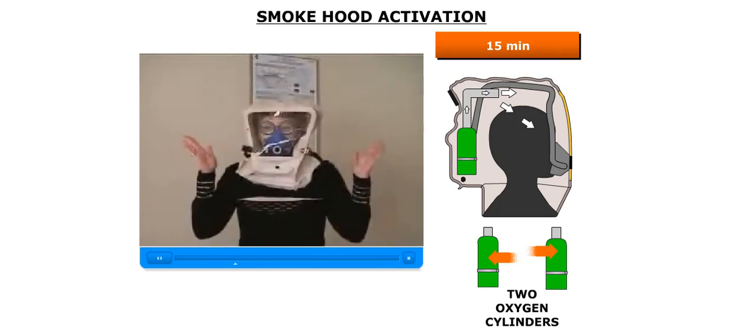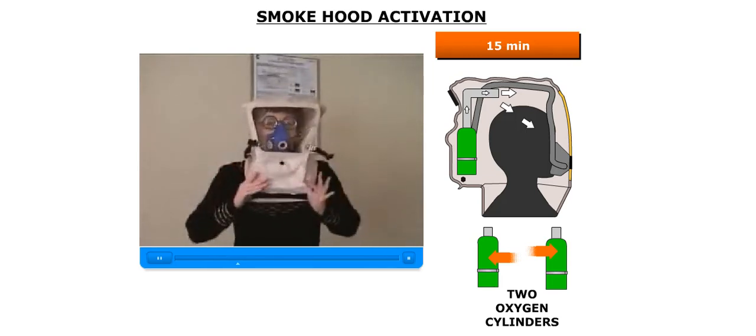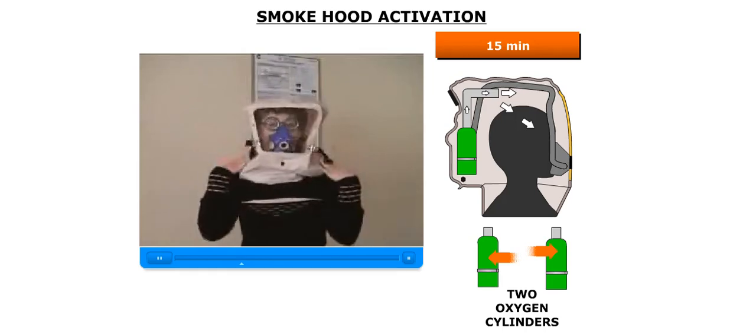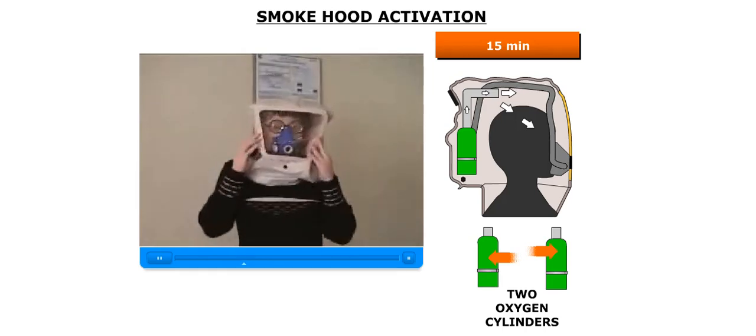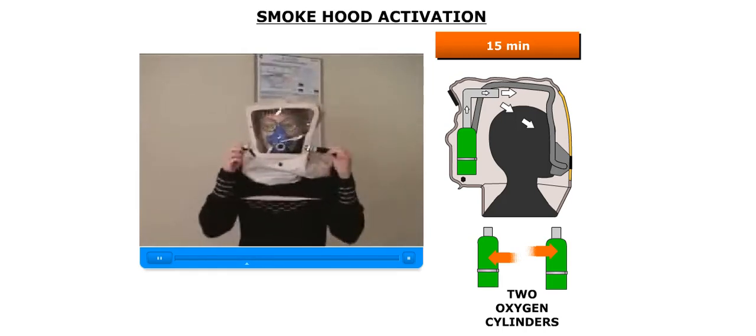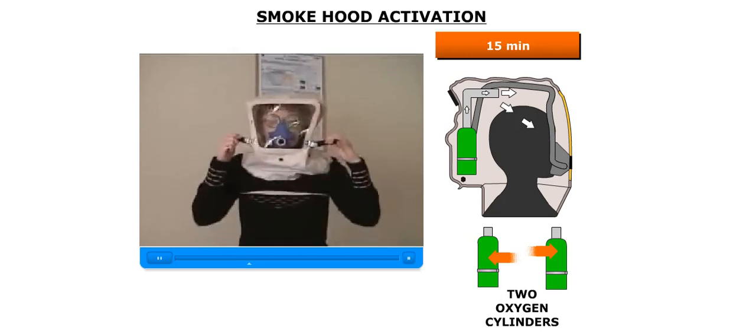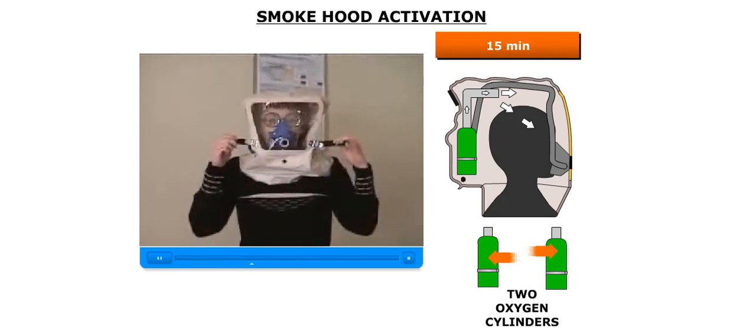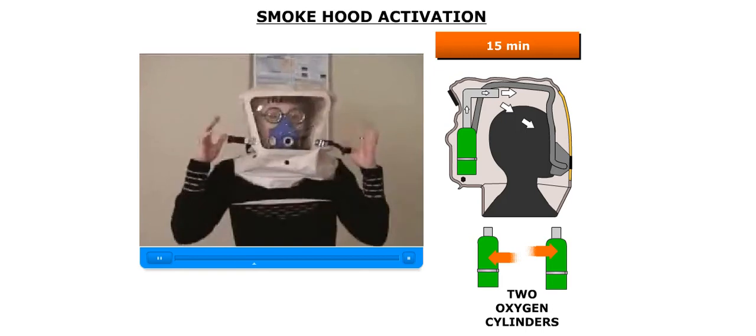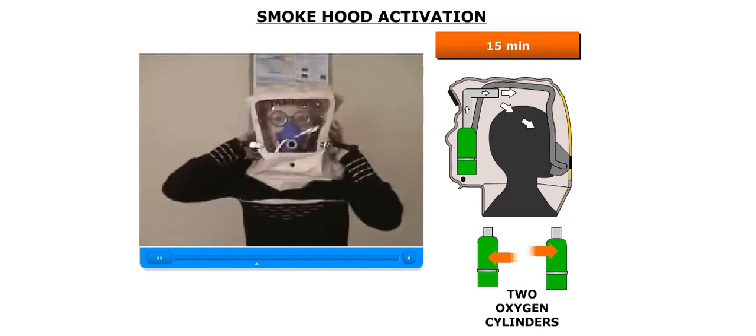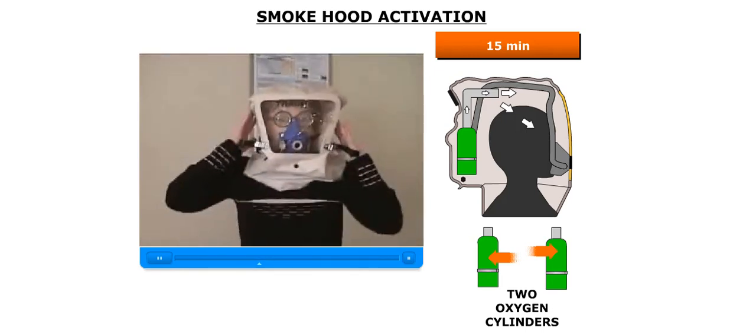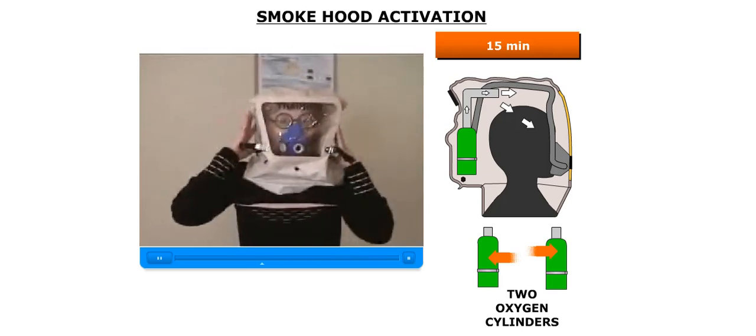Using both hands, pull the protective shield down over the collar and upper shoulder area. Move the hands forward to grasp the adjustment straps at the lower corners of the visor and pull forward sharply. Pulling actuates the starter candle and within one to three seconds a rushing noise of oxygen entering the hood and hood inflation will be evident.